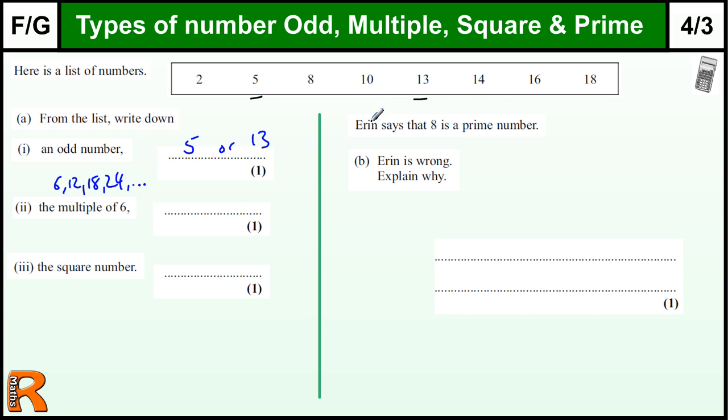The square numbers - square numbers are the numbers when you times a number by itself. So the first square number is 1 times 1 which is 1, then you've got 2 times 2 which is 4, 3 times 3 which is 9, 4 times 4 is 16, 5 times 5 is 25, and so on. So those are the square numbers. The one we've got here is 16.